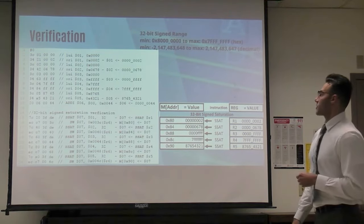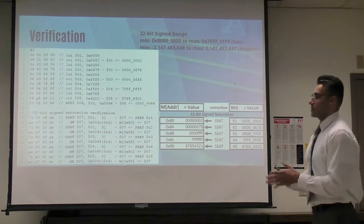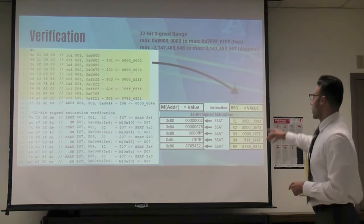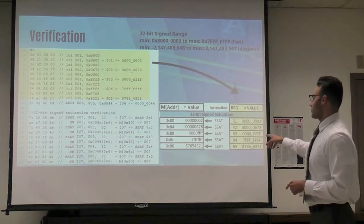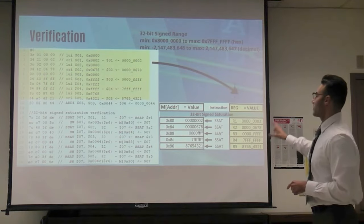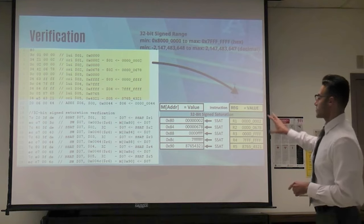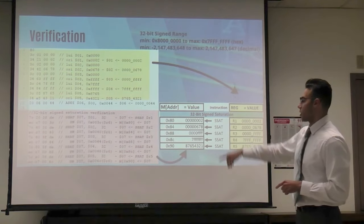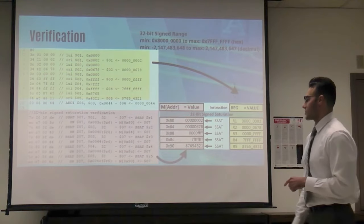For the 32-bit signed saturation, it has bigger bounds. R1, R2, R3, R4, and R5 all fall within the bounds, so all of them pass through and are saved to their registers.